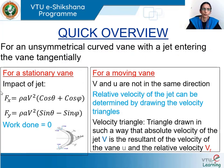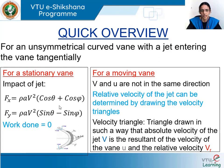Let us quickly glance through what we discussed in the previous lectures. When this tangential jet enters a vane, the velocity at the inlet and the velocity at the outlet can be resolved into components along the x and y directions. The force or impact of the jet on the vane along the x and y directions can be written in terms of the component velocities: Fx = ρAV² (cosθ + cosφ) and Fy = ρAV² (sinθ − sinφ).